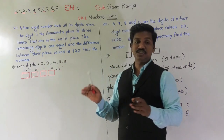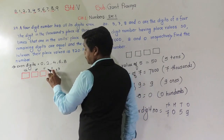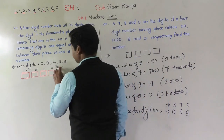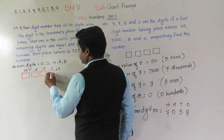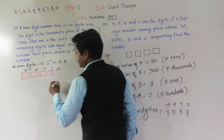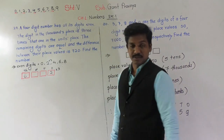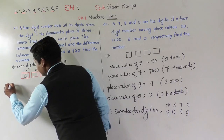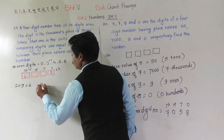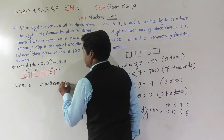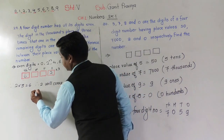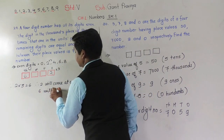From the even digits, if 0 is at the 1s place, 0 × 3 = 0, which doesn't work. If 2 is at the 1s place, 2 × 3 = 6. So 2 will come at the 1s place and 6 will be at the 1000s place.